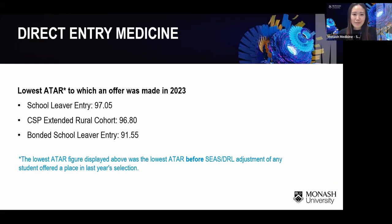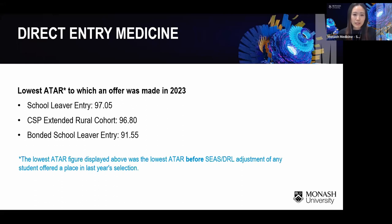The lowest ATAR to which an offer was made in 2023 is on our website under entry requirements. Bear in mind these ATARs reflect a selection process based on three equally weighted components — UCAT, ATAR, and interview — so don't look at the ATAR score in isolation. The lowest ATAR displayed is the lowest before any SEAS or Dean's Ruralist adjustment was applied. This information is all on our website on our study page.